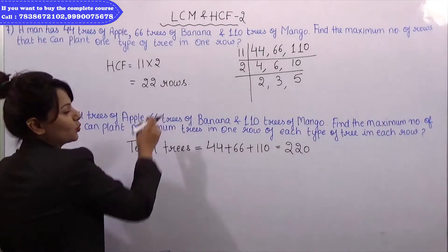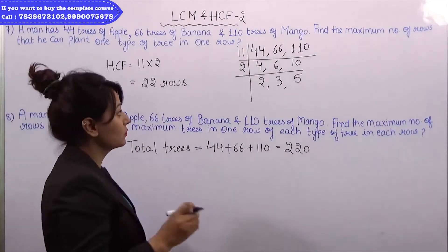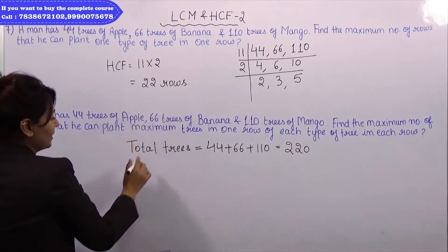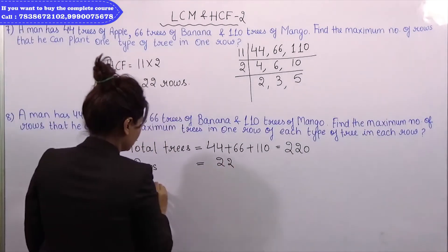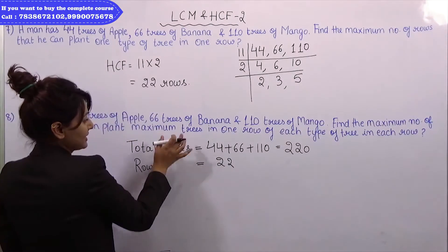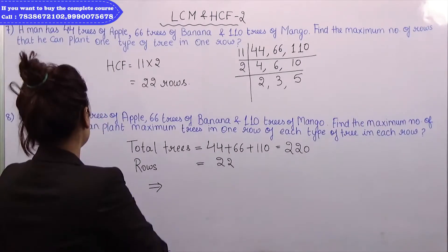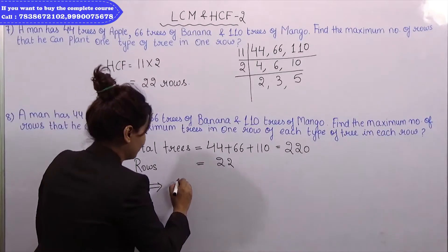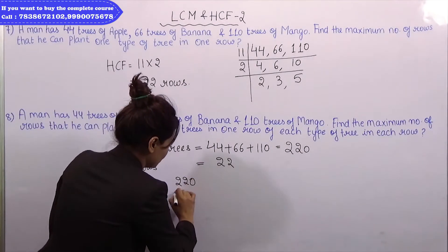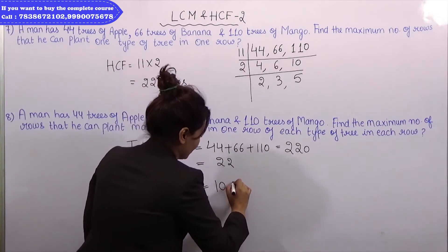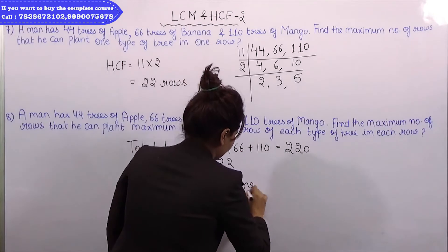Now let's take the answer to this question because we have to take the number of maximum rows. How many maximum rows came? 22. So when we take the maximum number of rows, 220 divided by 22, which is 10. How much will our answer be? 10.